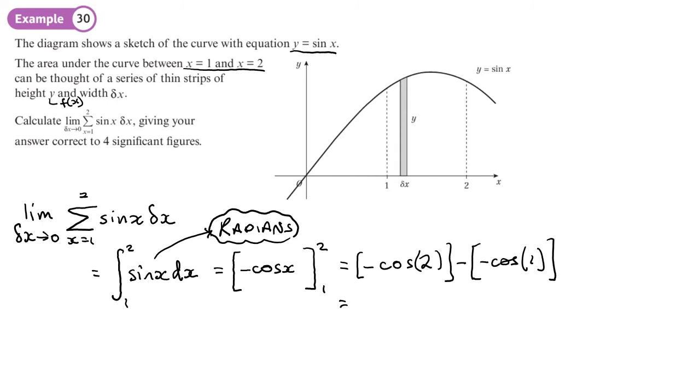And let's do that, make sure I'm in radians. So I'm in radians. So negative cos two minus negative cos one.